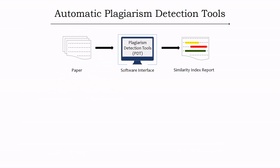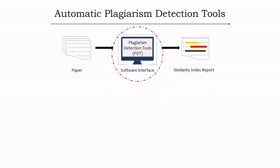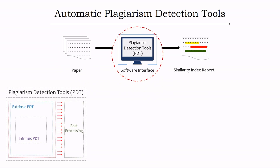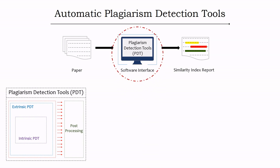Moving to the second step — the software interface. Here, the plagiarism detection tool detects the plagiarized contents in the uploaded document. Most plagiarism detection tools employ a three-stage detection process involving external detection, internal detection, and post-processing.